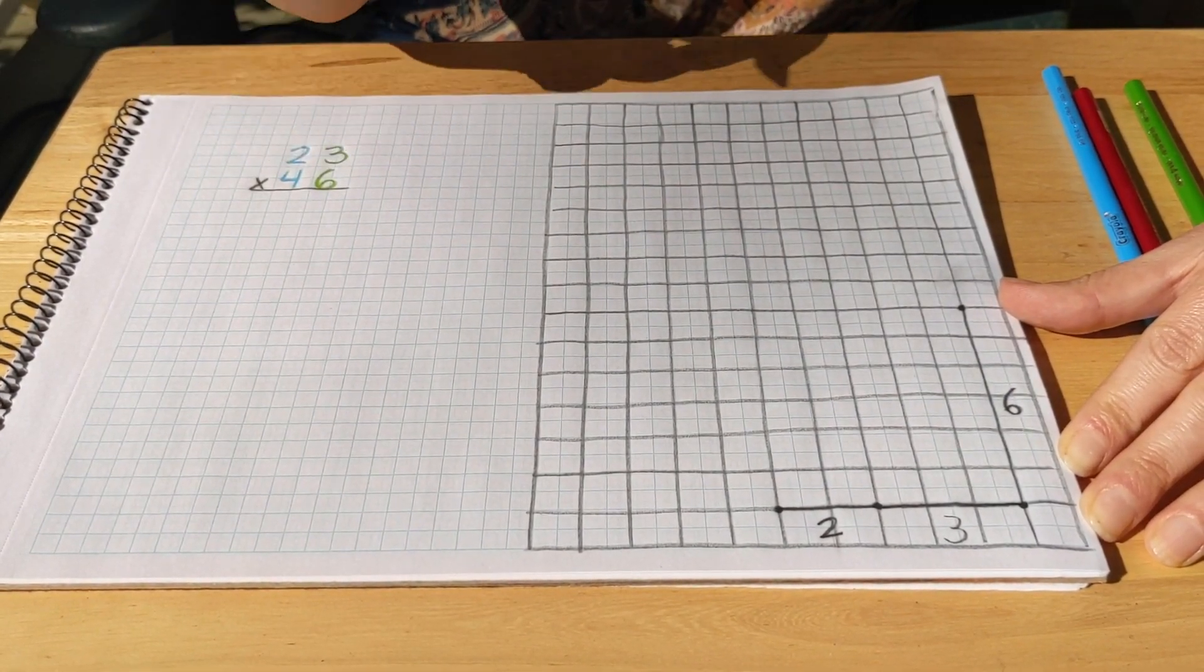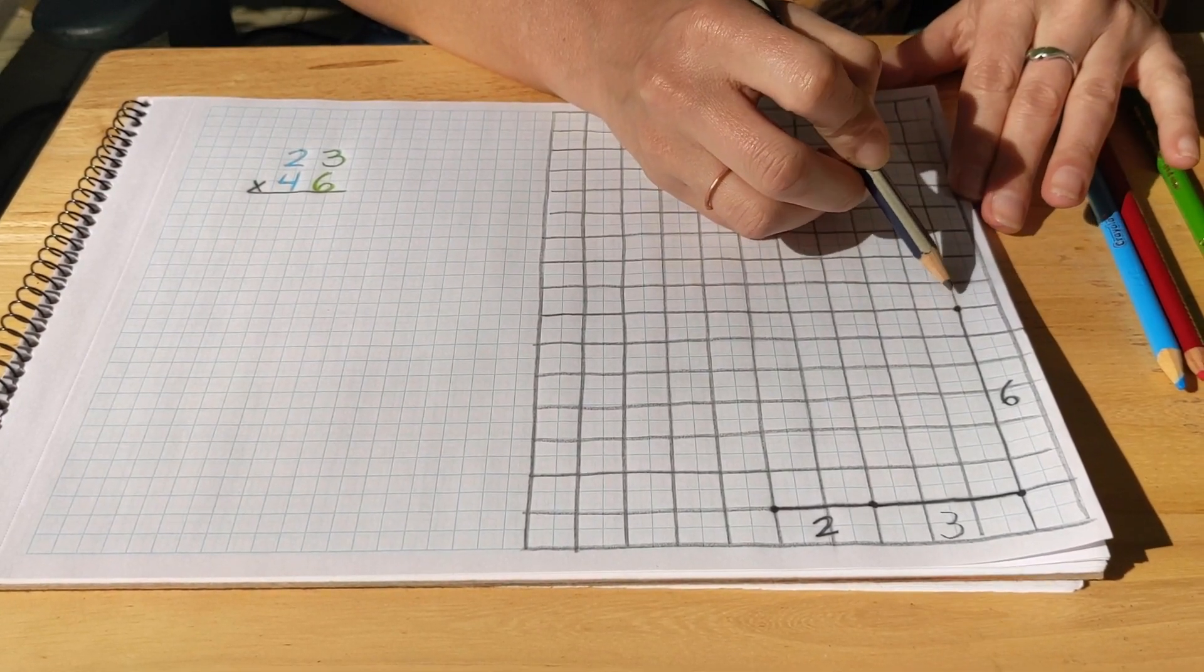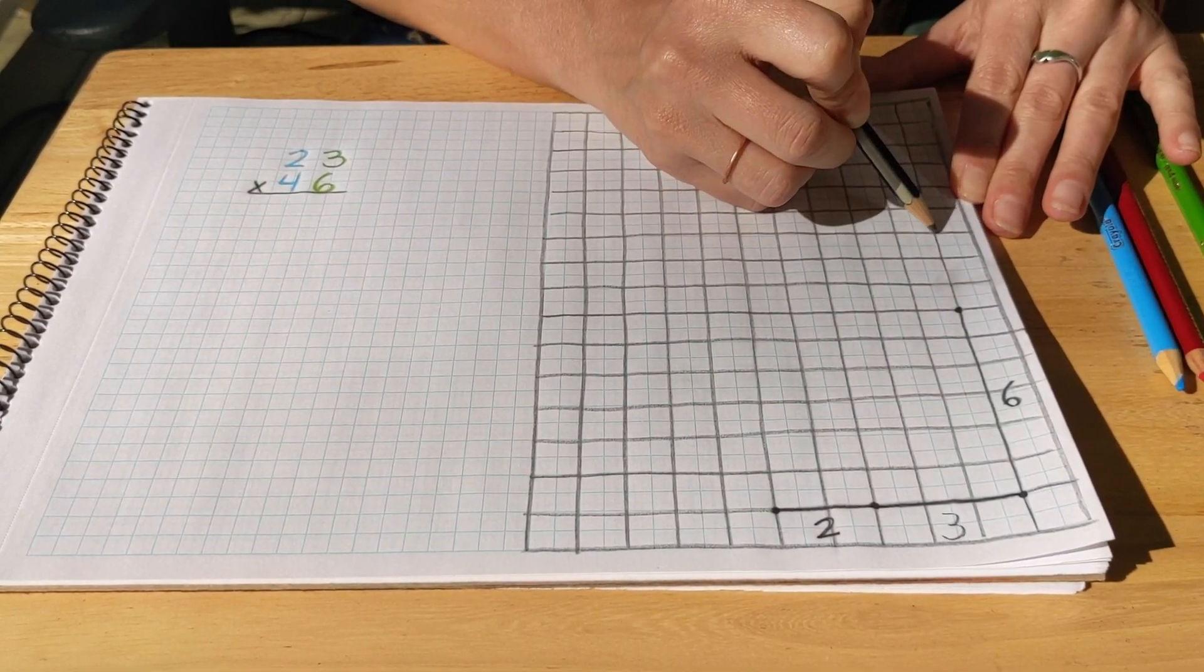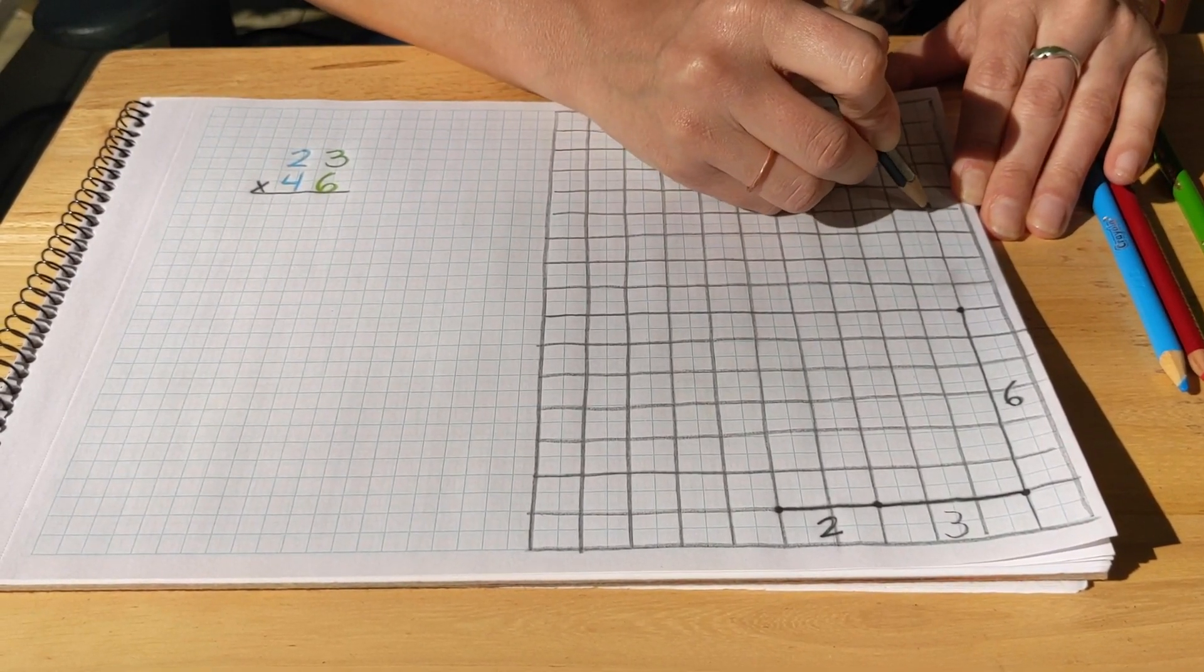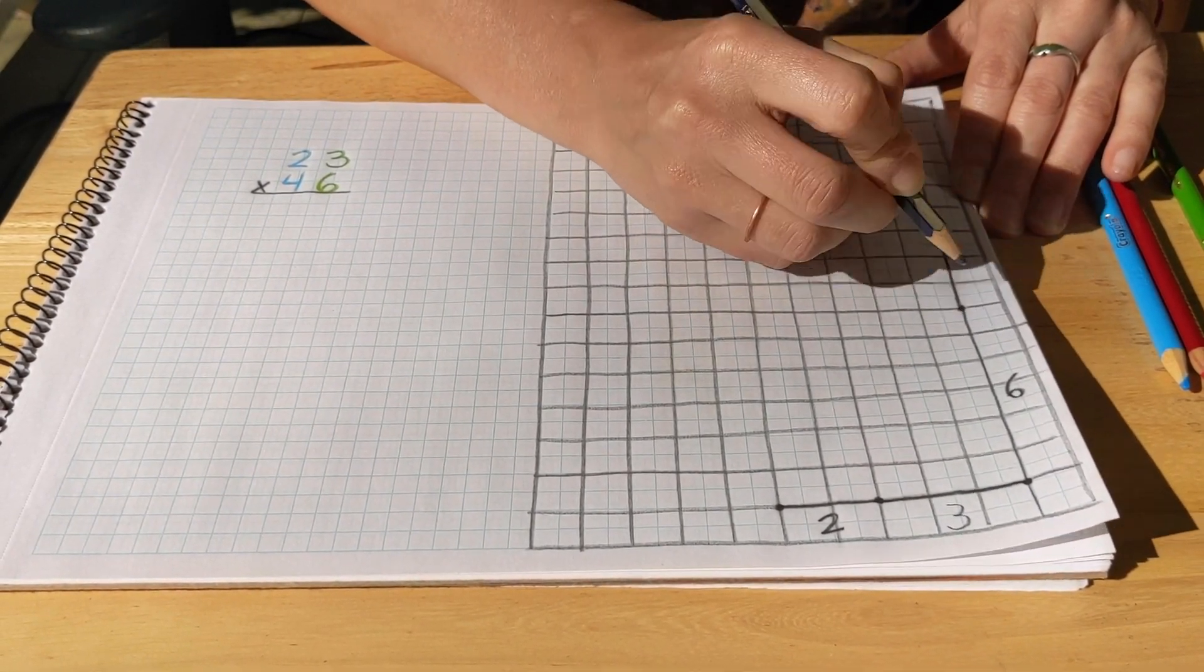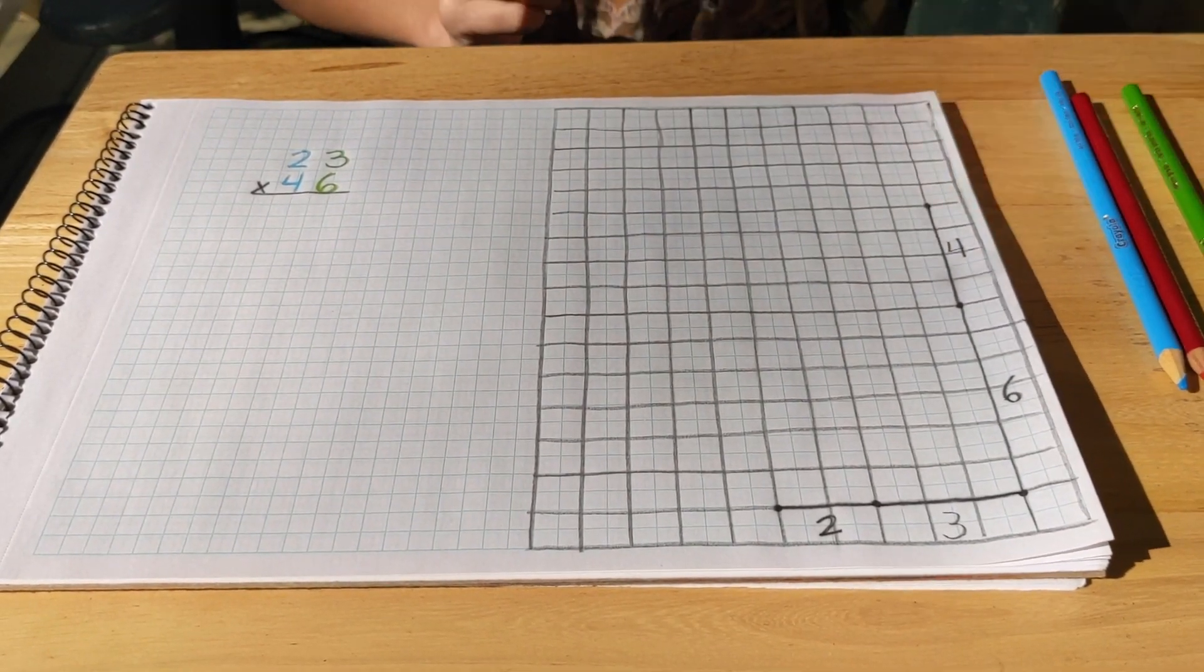Now we're going to count out our tens. We have four tens. So from that dot, we're going to count one, two, three, four. Put the dot and connect the lines. And then we have four tens there.